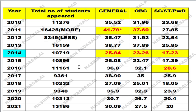I have made a compiled presentation where you can see the year, total number of students applied, general category cutoff, OBC category cutoff, SC, ST, and persons with disability cutoff. In 2011, for GATE biotechnology, 16,425 candidates applied. The total number of students appearing ranges from 8,000 to 16,000, and generally around 10,000 students apply for GATE biotechnology.